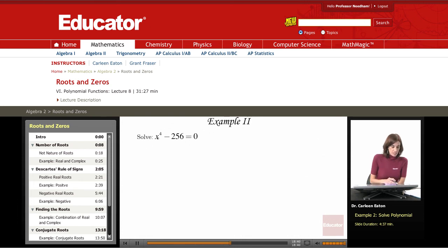Here I'm asked to solve x to the fourth minus 256 equals zero. This is actually the difference of two squares. This is in the form a squared minus b squared. So it's going to factor out to a plus b, a minus b.